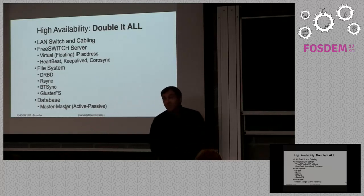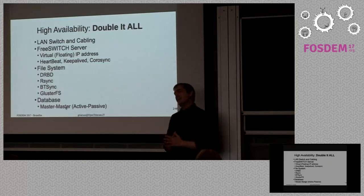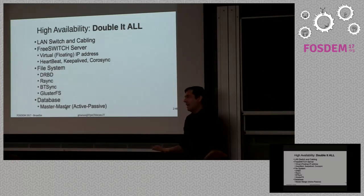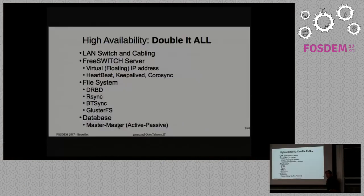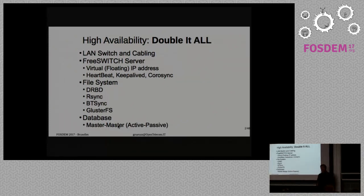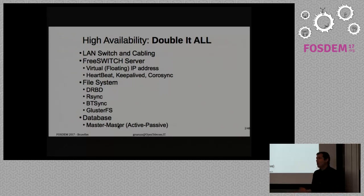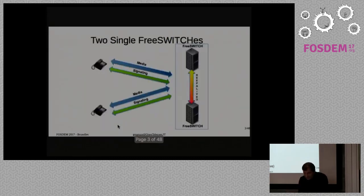High availability is the first thing. The most important part of high availability is you really need to have everything doubled, at least double. Before thinking about complex software or things like that, you first have to have double power supply, double different circuits for your power, and double switches. You can put so much thought into having your double networks, and then your switch burns and nothing works. So as a first thing, double it all.